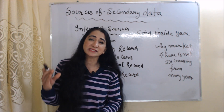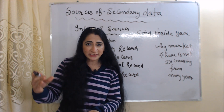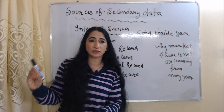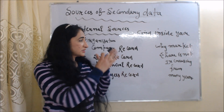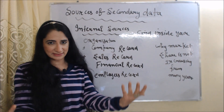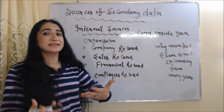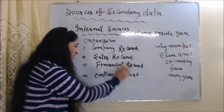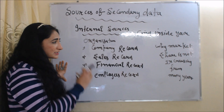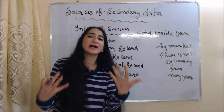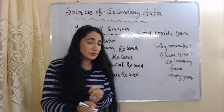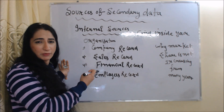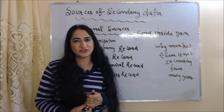Secondary data is collected by someone else earlier, and you are simply using it in your research. We can collect secondary data from two sources: internal sources and external sources. Internal sources means you can find these sources inside your organization — they include your company records, sales records, financial records, and employee records. For example, if you want to know why your market share has not been increasing for many years, you can get information from your company records, sales records, financial records, and employee records. This is called the internal sources of collecting secondary data.